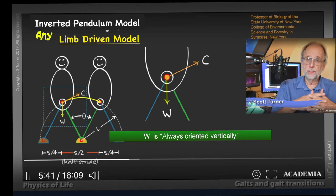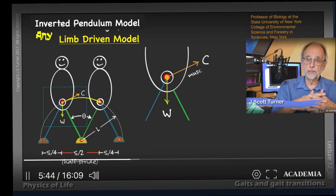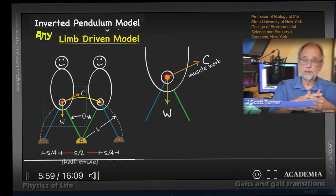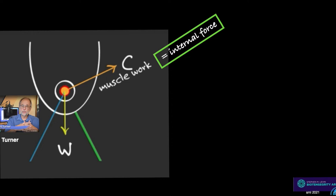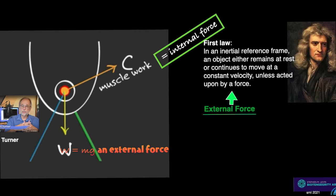Work must be done to initiate the half stride, oriented in the direction of force C, and this work comes from the muscles. Only once sufficient work has been done to elevate the body's center of mass to the top of the arc can gravity act to complete the half stride. Professor Turner is talking about the pendulum model — but we learned in first-year physics that an external force is needed to move a body at rest. Muscles are internal forces, and W is an external force, so you need an external force to move it. This is Newton's first law, and it invalidates the pendulum model.